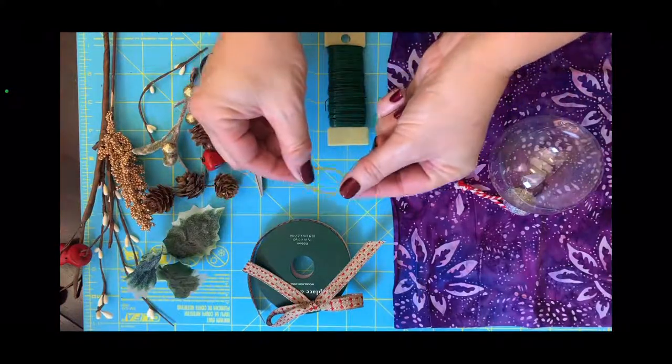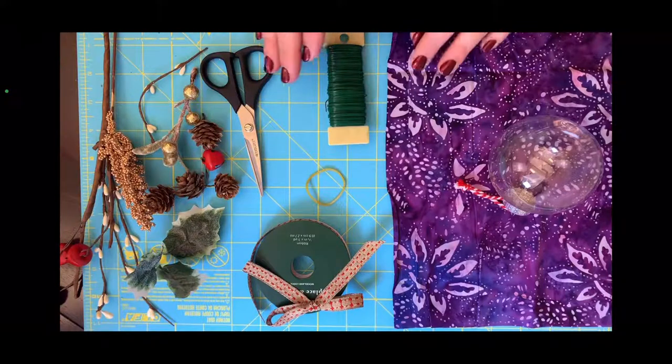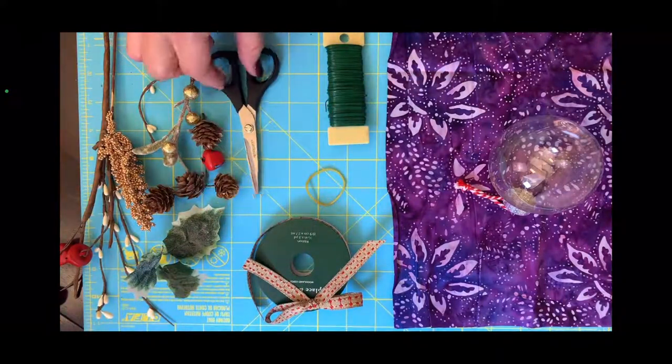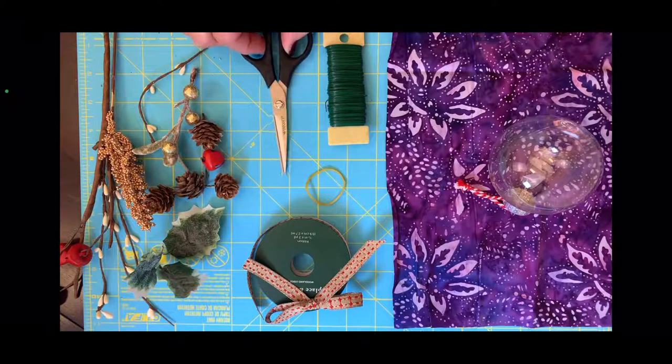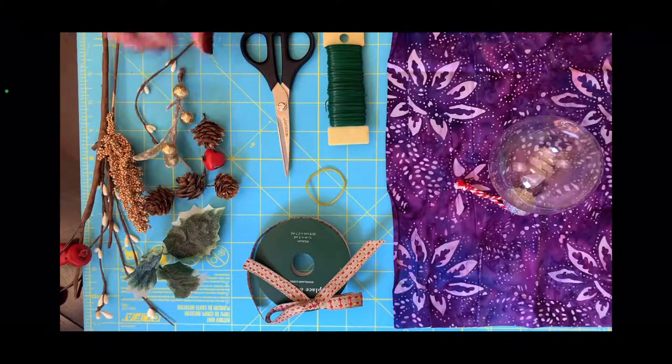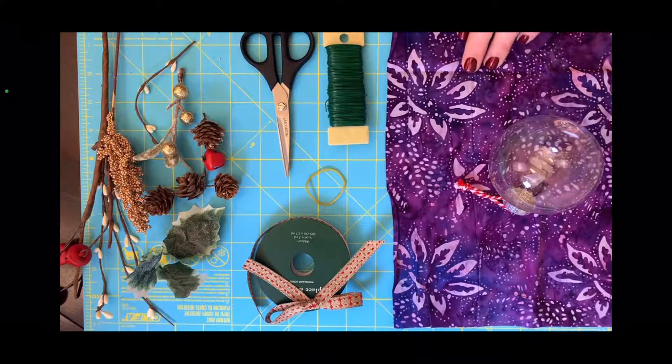This rubber band is just going to be temporary, it's just going to hold it onto the bulb temporarily until I can wire it. And then of course some ribbon and you need scissors for cutting the ribbon.